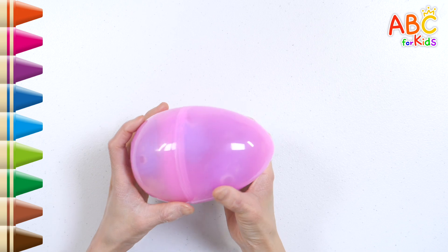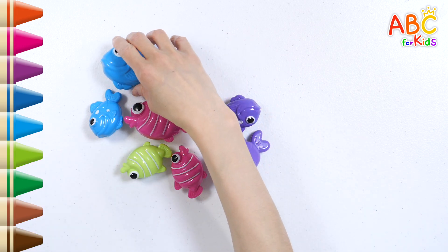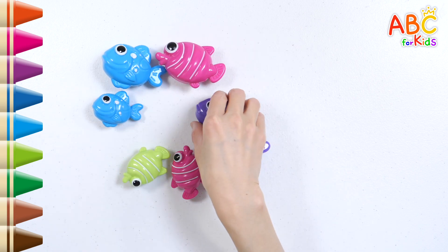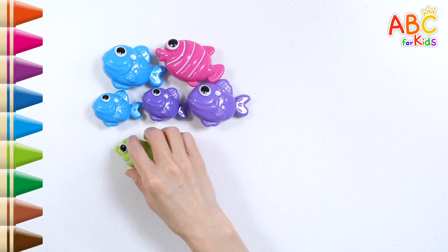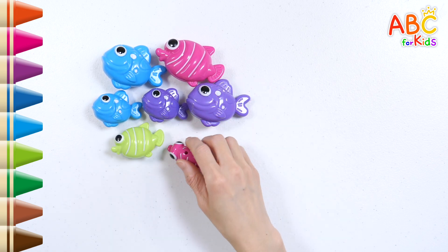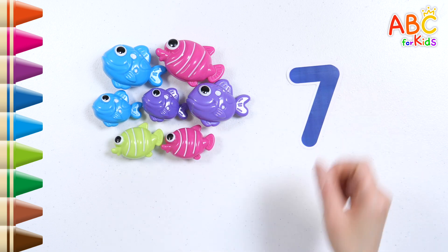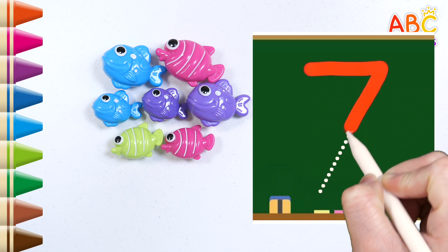What's in it? It's a fish. Let's count how many. One, two, three, four, five, six, seven. Seven fish in all. Let's write the number. Seven.